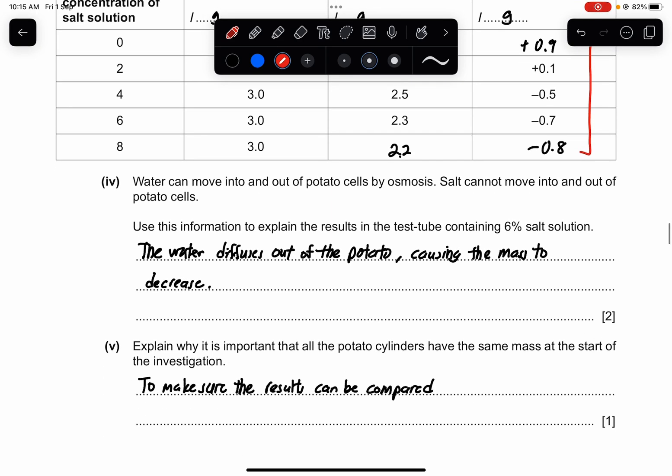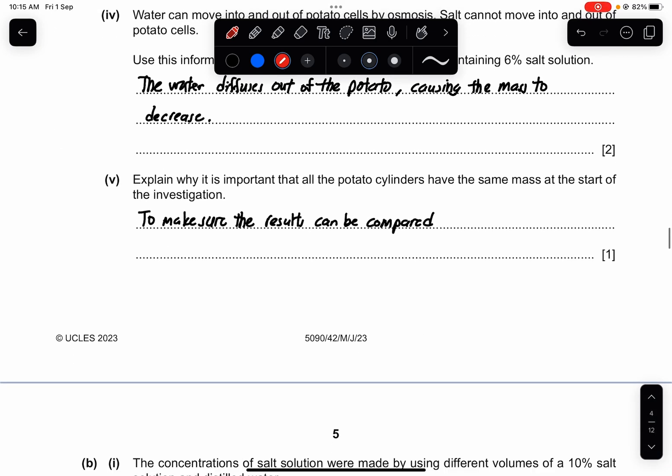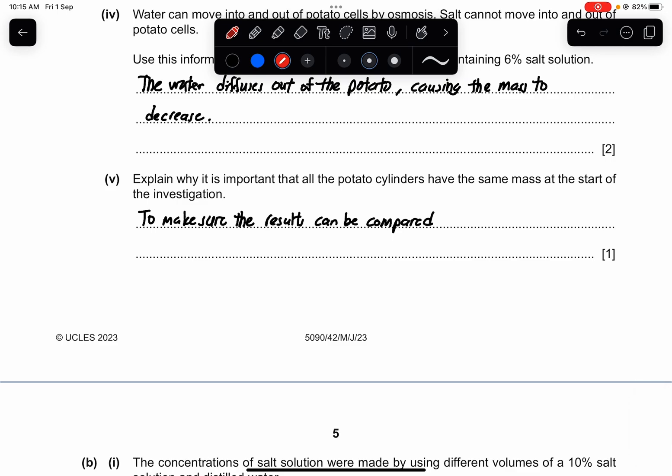Part 4. Water can move into and out of the potato cells by osmosis. Salt cannot move into and out of potato cells. Use this information to explain the results in the test tube containing 6% of salt solution. So the water diffuses out of the potato, causing the mass to decrease. Part 5. Explain why it is important that all of the potato cylinders have the same mass at the start of the investigation. So to make sure the results can be compared and it could be valid to make sure that it's a fair investigation.